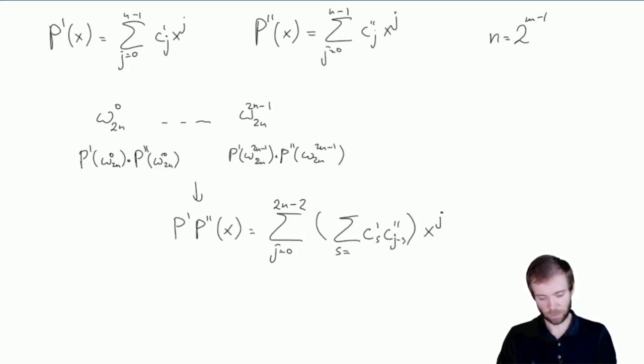For s from 0 to j. So essentially we are able to compute for every j the corresponding sum like this by two-stage application of fast Fourier transform.